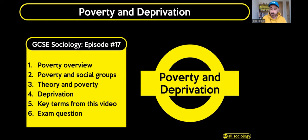We're going to cover an overview on poverty, different types of poverty, then look at poverty and social groups — how poverty affects different classes, genders, sexualities, ethnicities and so on. We'll look at what different theories say about poverty, do a deep dive into deprivation and different types of deprivation, then finish with 10 key terms and a nine-mark mini essay exam question.